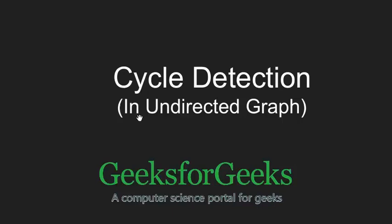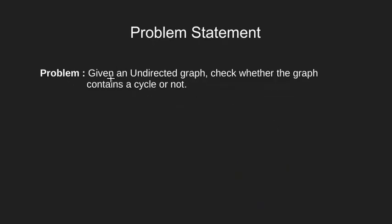Hello friends and welcome to GeeksforGeeks. In this tutorial we are going to cover cycle detection in an undirected graph. The problem statement is that we are given an undirected graph and we have to check whether it contains a cycle or not — print true if there are one or more cycles, or false if there are none. This type of problem we have covered earlier in case of directed graphs.